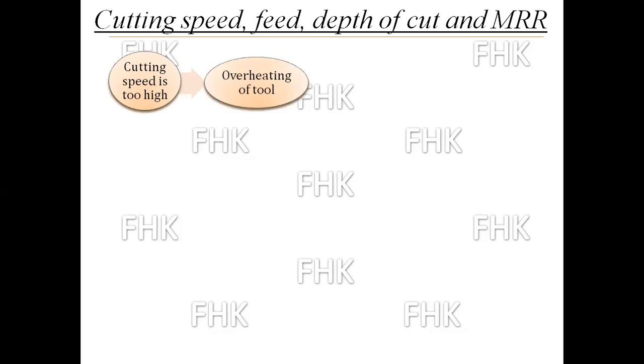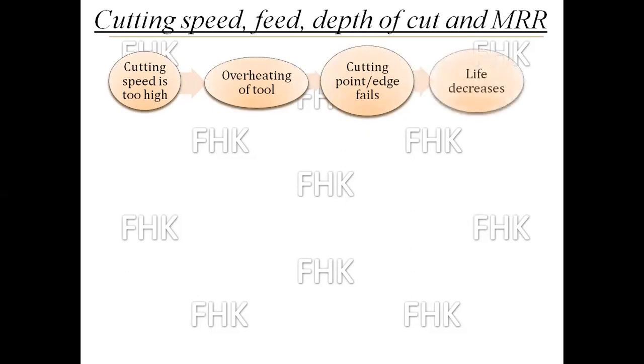The cutting speed should not be too high or too low. When cutting speed is too high, overheating of the tool takes place due to friction between the cutting edge and the workpiece material. Due to overheating, the cutting point or sharpness of the cutting edge fails — the cutting edge becomes blunt. This directly affects the life of the tool, causing tool life to decrease. So the cutting speed should not be too high.